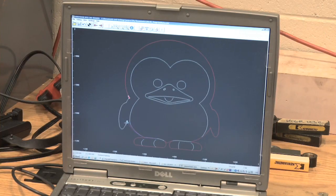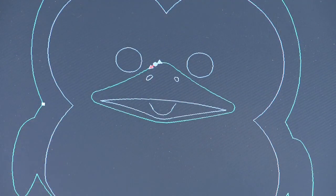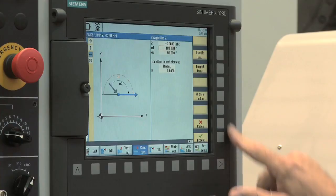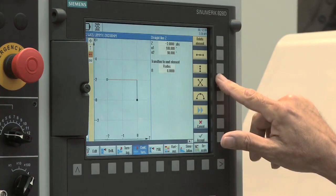The CAD reader software can be used to call up a DXF file from a CAD system, then brought into the control. This enables you to edit the file right on the control.